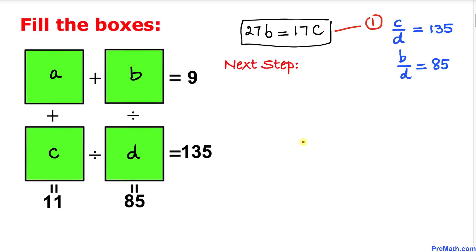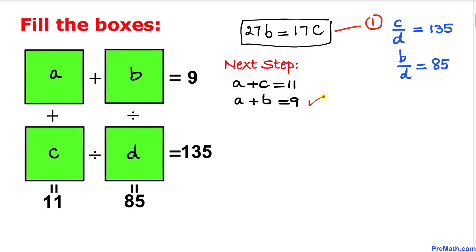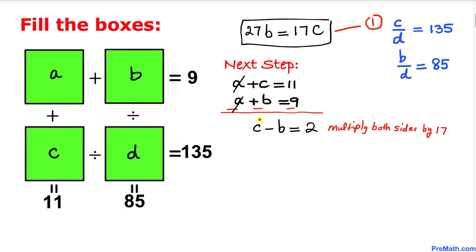Now let's add the two vertical boxes: a plus c equals 11, and the two horizontal boxes: a plus b equals 9. Subtracting the second equation from the first, the a terms cancel and we get c minus b equal to 11 minus 9, which is 2.